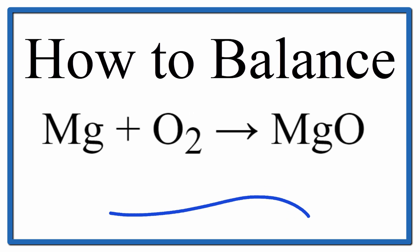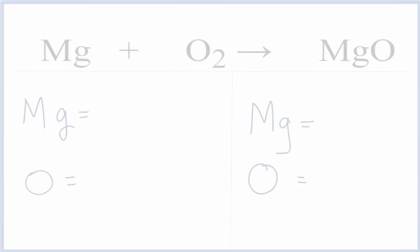To balance this equation, magnesium plus oxygen gives us magnesium oxide. Let's first add up the atoms on each side of the equation.